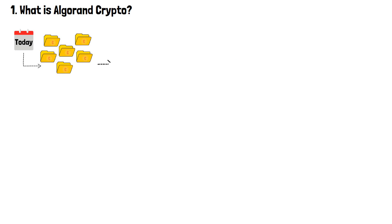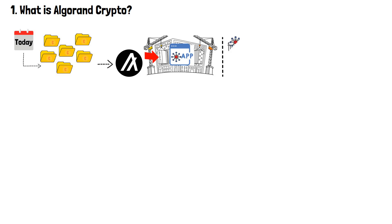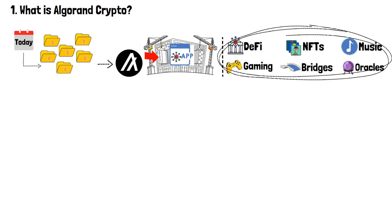As of today, there are many projects that use Algorand as the construction site for their decentralized applications, or dApps. Be it something related to DeFi, NFTs, music, gaming, bridges, oracles, or anything else, you'll find it in the Algorand land. The number of these active projects is over 700 and it's constantly growing.